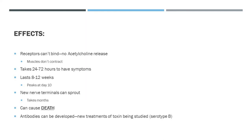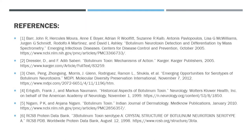If it hits the wrong muscle in the synaptic cleft, you're done for. Thankfully, the body can develop antibodies, but if you're using this as a treatment, obviously that's not the best thing. So they've actually been looking into using new treatments of the toxin, and they're studying serotype B and reformulating Botox.